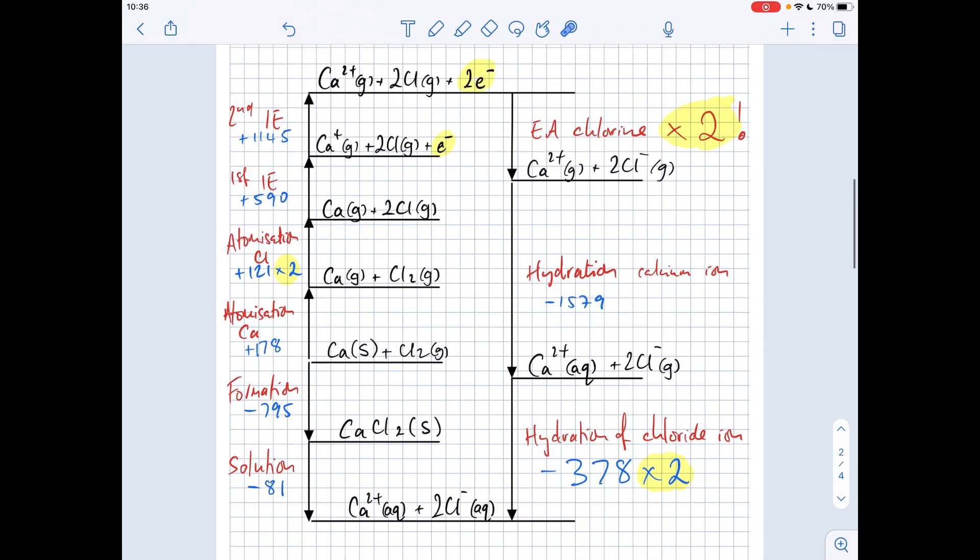Okay, so there's my cycle. So I'll just talk through how I did it and some things to watch out for. So I started here at the element. So calcium solid, chlorine gas. Just make sure that your state symbols can be deciphered. So solid definitely looks like an S. Gas definitely looks like a G. Mark schemes do say that if they are indecipherable by the examiner, they've got to mark them wrong. So make sure nice and clear state symbols.